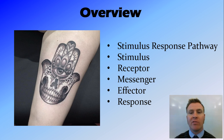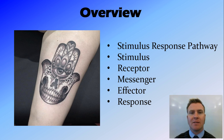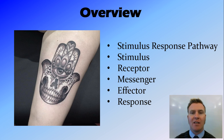In this video we've looked at the stimulus response pathway: the stimulus being the deviation from the normal; the receptor being a special kind of neuron cell that detects that stimulus; the messengers being the nerves that carry the message around the body; the effector being the thing that elicits the response; and the response itself — what that effector does to change according to that stimulus. Thanks for watching guys.